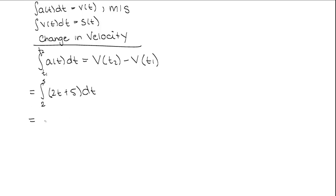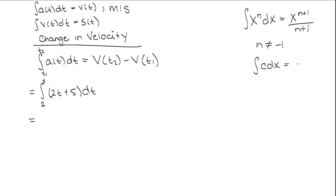Now we can start to integrate. As a reminder, when you integrate x to the n dx, you get x to the n plus 1 over n plus 1, where n cannot equal negative 1. When you integrate a constant, you simply multiply it by x. For the first term 2t, when we integrate we get 2t squared over 2, which is just t squared. And when we integrate 5, we get plus 5t. We integrate from 2 to 5, and this function t squared plus 5t is the velocity.